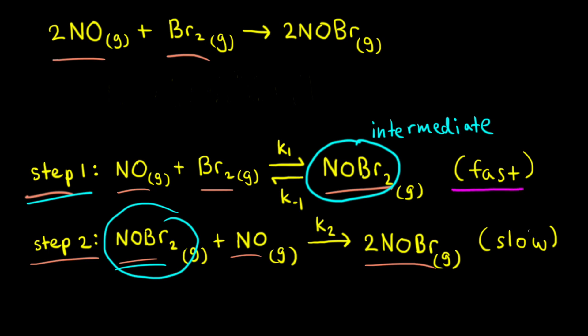The first step of the mechanism is fast, and the second step is slow. Since the second step is slow, this is the rate-determining step. We can write the rate law for the overall reaction by writing the rate law for the elementary reaction that makes up step two of our mechanism.